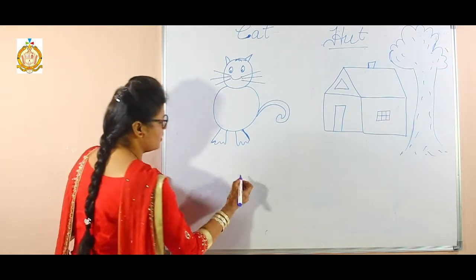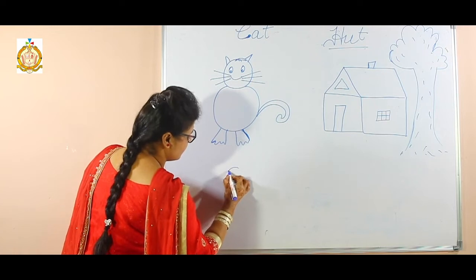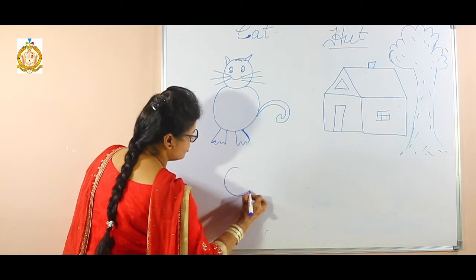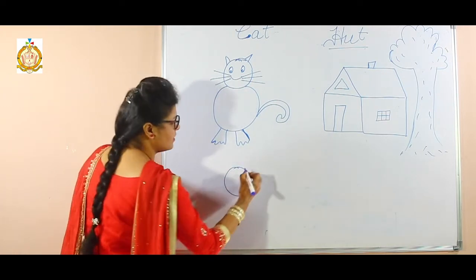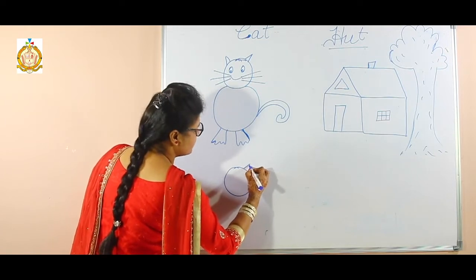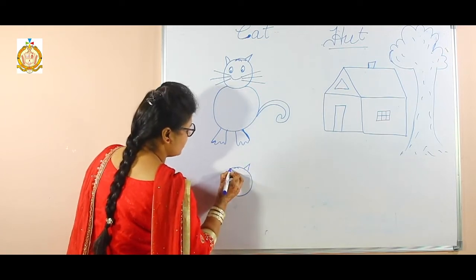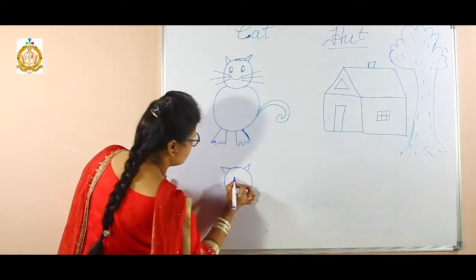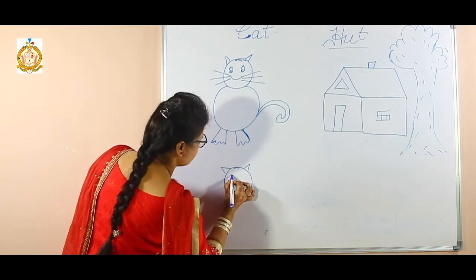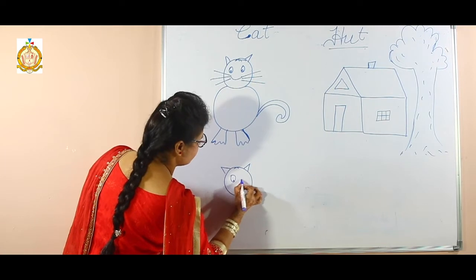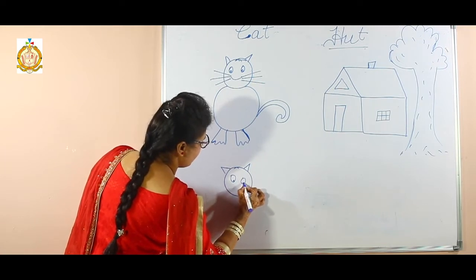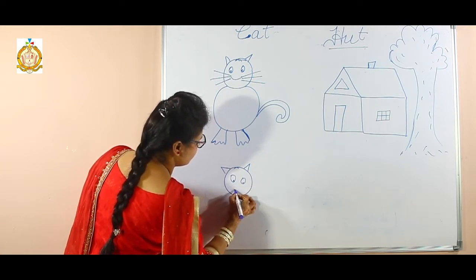First of all, draw a circle. What you have to draw? Draw a circle. Then make ears like V — ears like V. Then draw eyes like this. What you have to draw? Eyes.